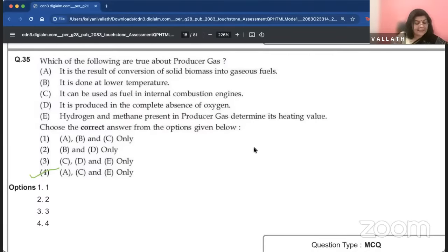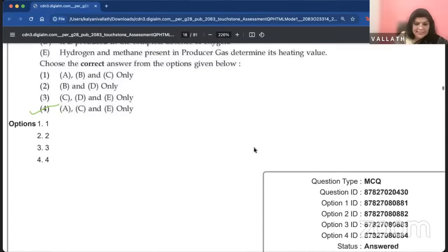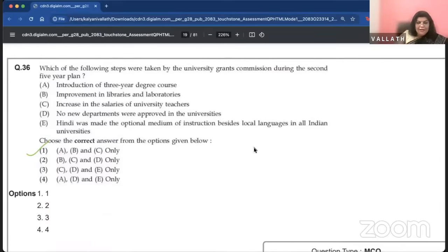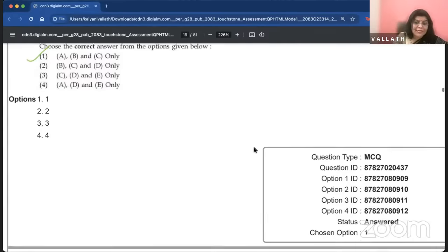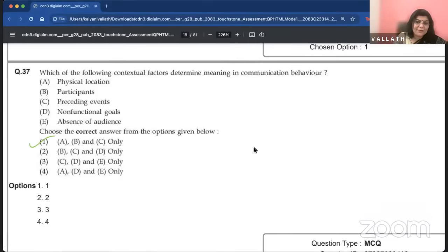A security system records video footage. One minute of video requires 180 megabytes of storage. How much storage would be needed for two hours of video footage? The answer given to me is 21.1 gigabytes. The Nalanda University in ancient India attracted students from various parts of Asia. The Nalanda University is overshadowed by the universities in Europe and Arabia immediately after its establishment. Second statement is not correct. Which of the following are true about producer gas?